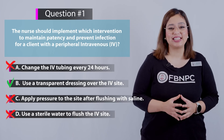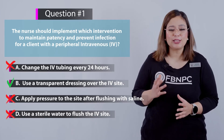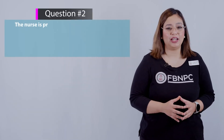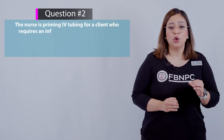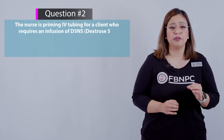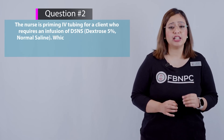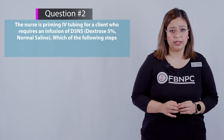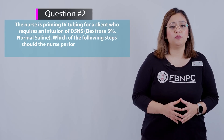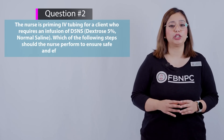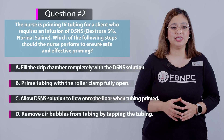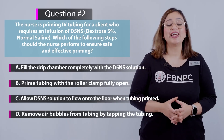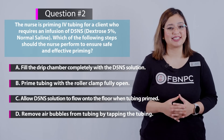I hope you guys are still learning and enjoying. Let's move on to the next question. The nurse is priming IV tubing for a client who requires an infusion of D5-NS, which stands for dextrose 5% normal saline. Which of the following steps should the nurse perform to ensure safe and effective priming? Pause the screen and think for yourself.